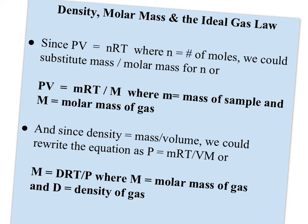Or we could also substitute in density, since density is mass over volume. And we have both mass and volume in our equation. So the density equation is usually rewritten as M equals DRT over P. Why would we want to use these equations? Well, these are both helpful when you're trying to identify a gas, because both density and molar mass are specific to the identity of the gas.